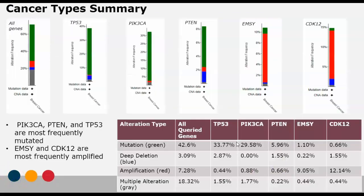The next dataset is the cancer type summary for all of the query genes. Each of these summaries provides an alteration frequency breakdown for how frequent these alterations happen in each specific gene. Below is a table with a percentage breakdown of all the specific alterations and their alteration frequency for each individual gene. Based on this analysis, PIK3CA, P10, and TP53 are most frequently mutated, while MZ and CDK12 are most frequently amplified.